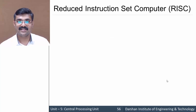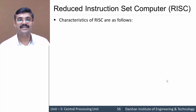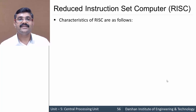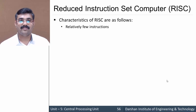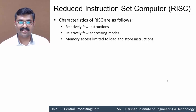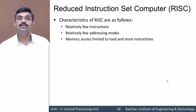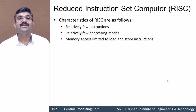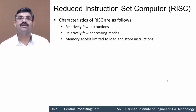Now let us discuss the reduced instruction set computer, RISC. It is essentially the opposite of CISC — relatively few instructions, few addressing modes, and memory access for operands is limited to only two instructions: load and store. Addition, subtraction, or any other instruction cannot access memory directly.